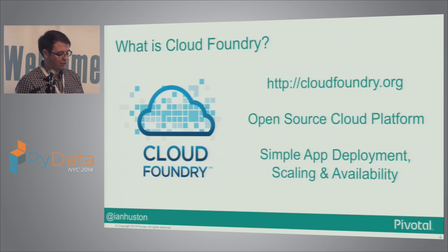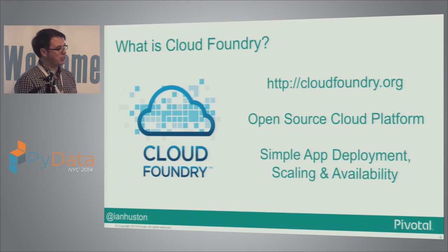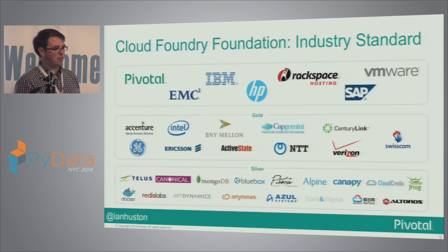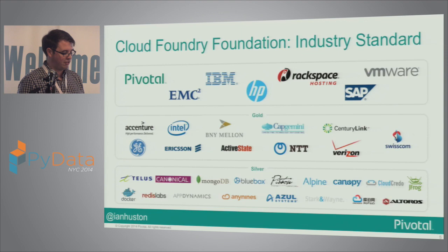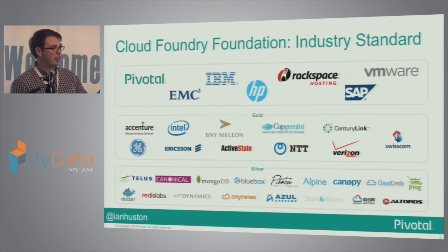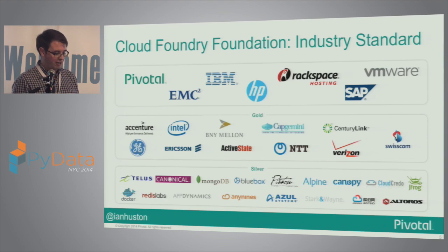Cloud Foundry is an open source platform. It was first developed at VMware and then became part of Pivotal when Pivotal started last year. We're still leading the open source development but we've got quite a lot of partners involved now. We're building the Cloud Foundry Foundation, similar in idea to the Python Software Foundation or the Apache Foundation — a governing body that helps direct the development and promotion of Cloud Foundry. Big names are involved: IBM, HP, SAP, and others. Interestingly, Canonical is on there and Cloud Foundry ships with Ubuntu Server now.